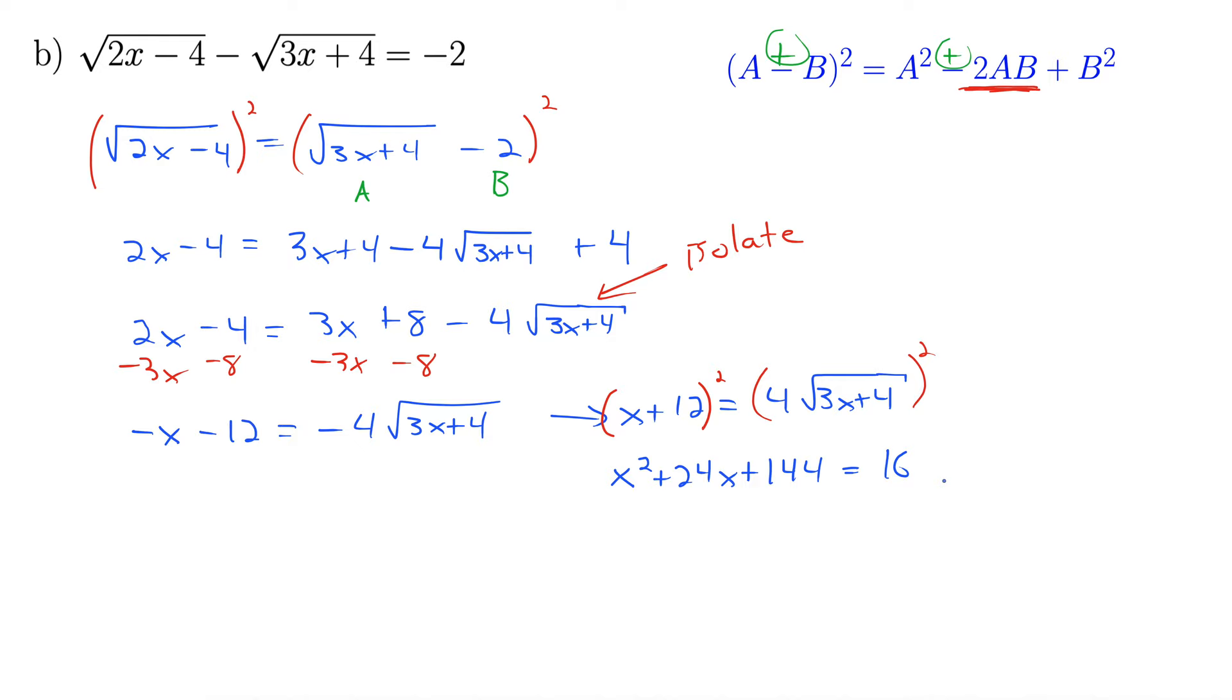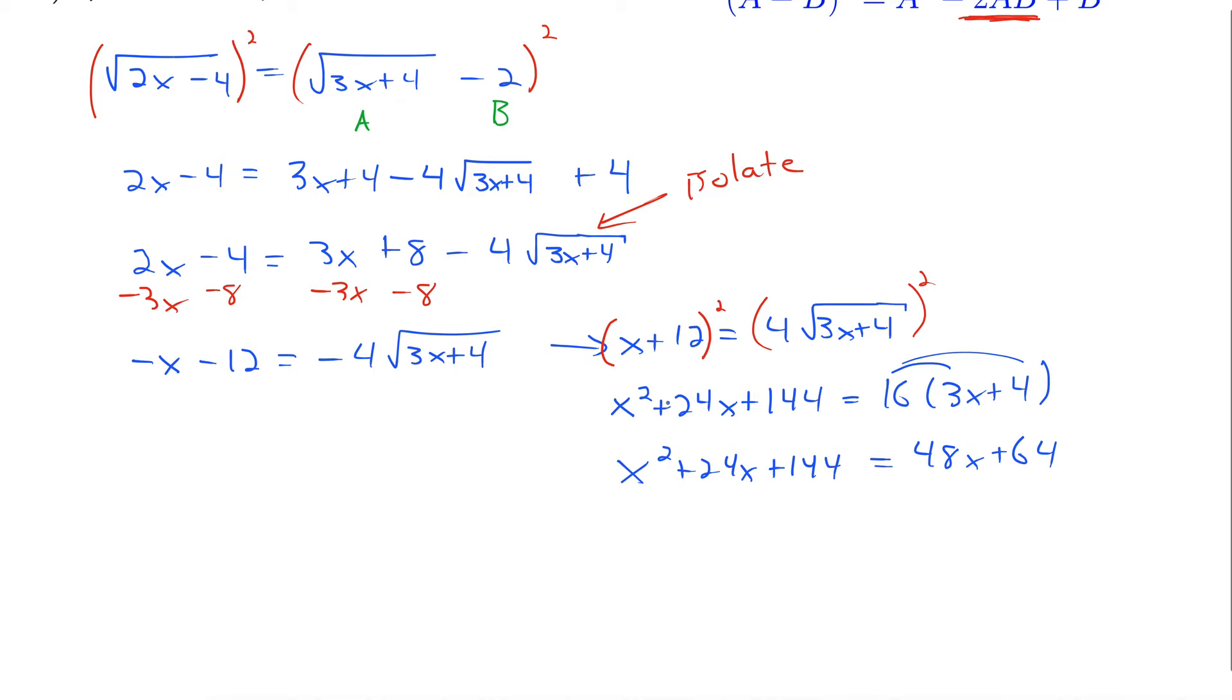Remember, anytime we see an x squared and an x in the same equation, we want to get it set equal to 0 on one of the sides. x squared plus 24x plus 144. I'm distributing this 16 through. Equals 48x plus 64. Let's get a 0 on the right-hand side. We're going to subtract off 48x and 64. That gives us x squared minus 24x plus 80 equals 0.